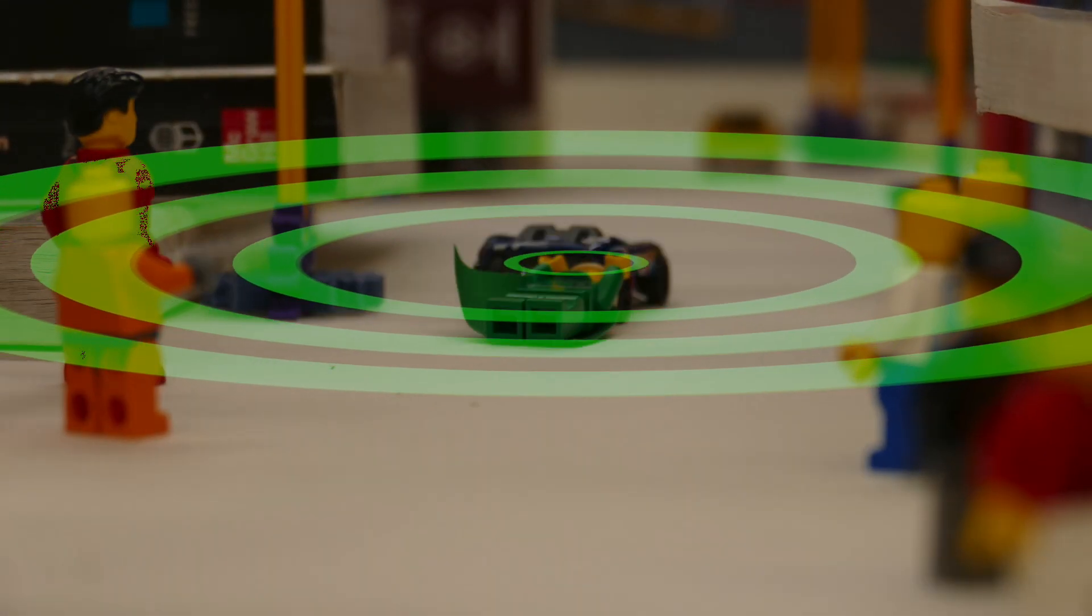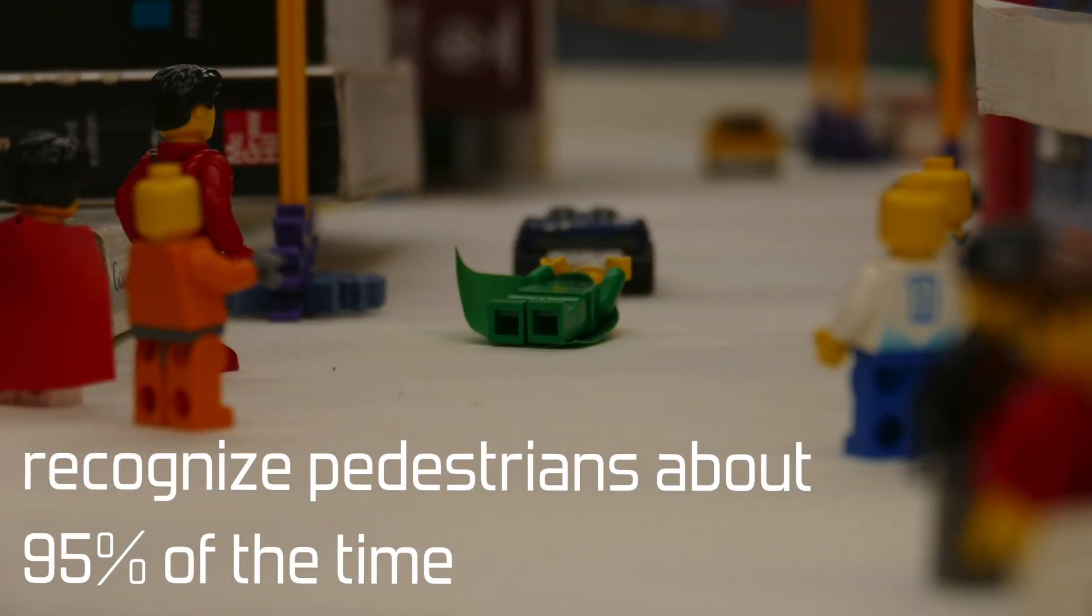Image sensors are far from perfect, however, only recognizing pedestrians about 95% of the time.